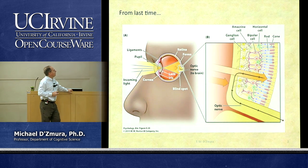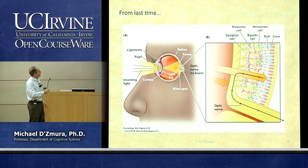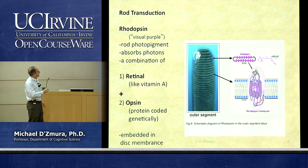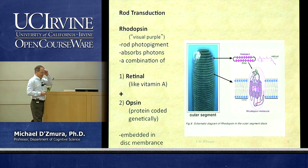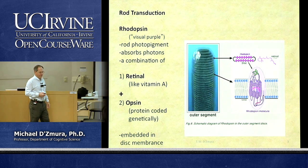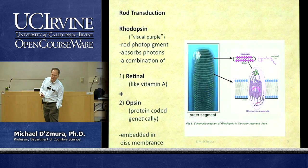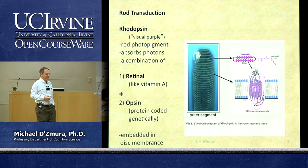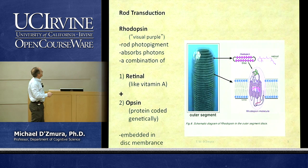We're going to talk about how light is transduced by photoreceptors, focusing particularly on rods. A rod has an outer segment, which is the rod-shaped region where we find photopigment molecules. The photopigment in rods is rhodopsin.